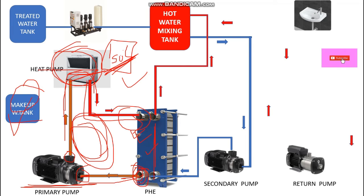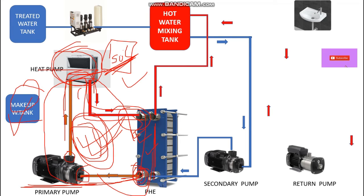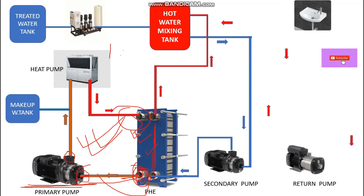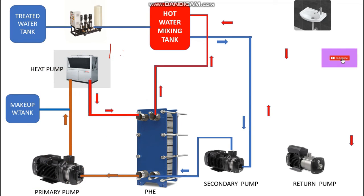Beside the heat pump we have a makeup water tank. This is used because we have a closed loop of water in the primary circuit. During heating, due to evaporation the water level decreases, so at that time you can take water from this makeup water tank to maintain the water level in the primary line.